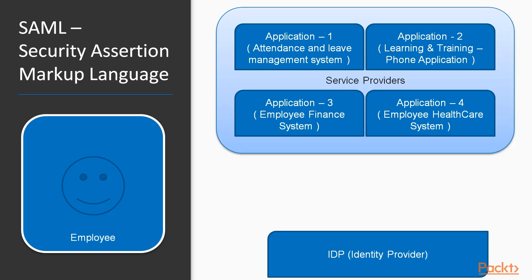We have two things: SP (service providers) and IDP (identity provider). The identity provider is just a server — it could be Okta, it could be WSO2. This identity provider will have some kind of LDAP server or database where it stores user credentials, meaning the credentials of the employees. For example, WSO2 Identity Server uses Apache Directory Server as its backend LDAP server to store credentials.